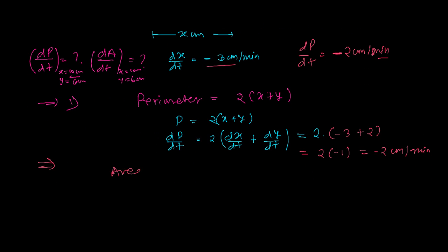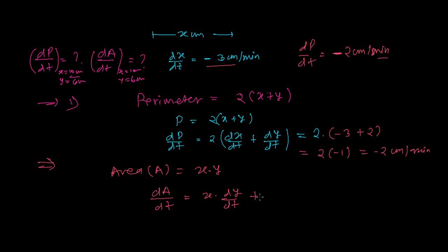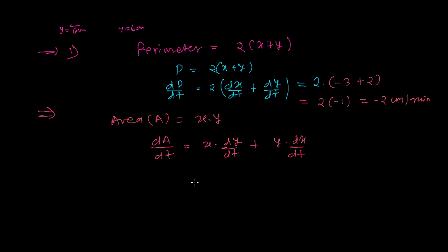We know that the area of a rectangle A equals length times width, so A = x times y. Let's differentiate both sides with respect to t. Using the product rule: dA over dt equals x times dy over dt plus y times dx over dt.